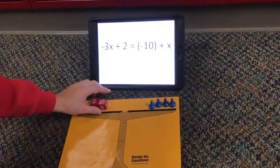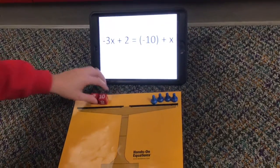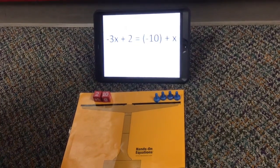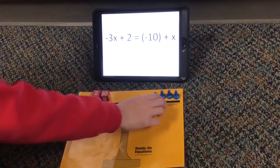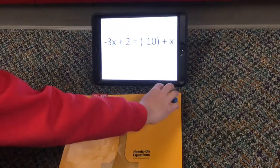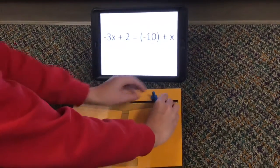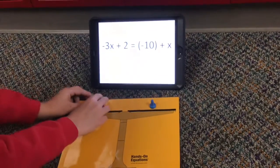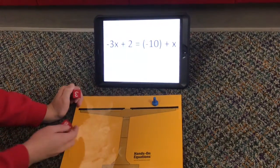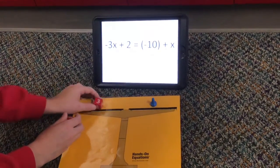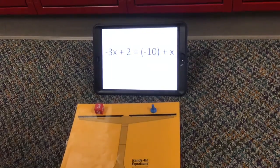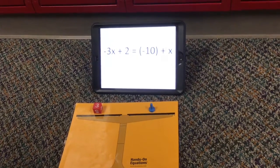So now 4x equals 12, so we have to divide each by 4. So x divided by 4 is 1x. And then 12 divided by 4 is 3. So x equals 3.